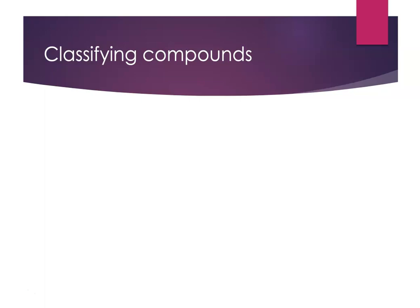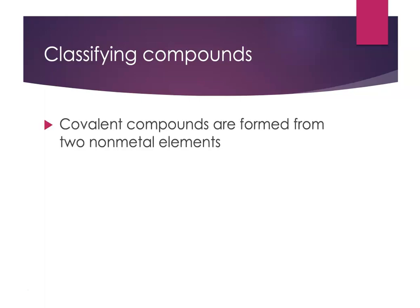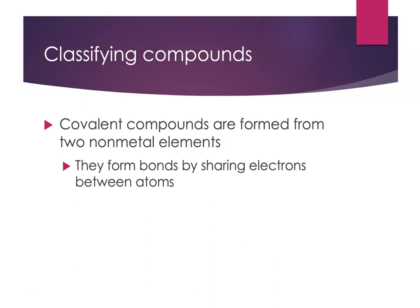In order to name binary molecular compounds — or binary covalent compounds — correctly, we need to know that we're looking for compounds that are made from two non-metal elements. When two non-metal elements form a compound, they form bonds between the atoms by sharing electrons. We call this a covalent bond, which is why we call them covalent compounds. These are found as molecules, so sometimes we'll talk about them as molecular compounds. We only use the word molecule when talking about covalent bonds and covalent compounds. Ionic compounds really aren't referred to as molecules.